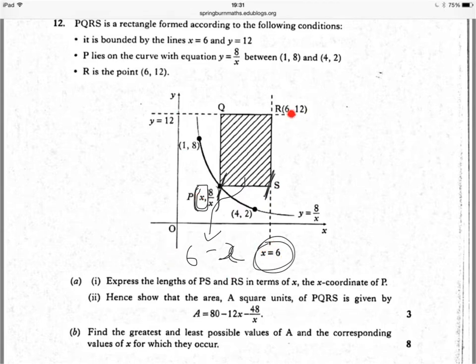So up here, the y-coordinate is 12. So it's the difference between the y-coordinates here. The y-coordinate of S is the same as the y-coordinate here, which is 8 over x. So that would be 12 minus 8 over x.